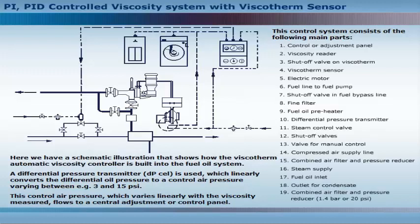This control system consists of the following main parts: Control or adjustment panel, viscosity reader, shut off valve on the viscotherm, viscotherm sensor, electric motor, fuel line to fuel pump, shut off valve in fuel bypass line, fine filter, fuel oil preheater, differential pressure transmitter, steam control valve, shut off valves, valve for manual control, compressed air supply line, combined air filter and pressure reducer, steam supply, fuel oil inlet, and outlet for condensate.